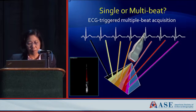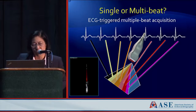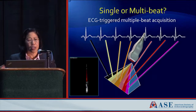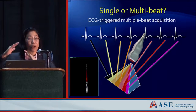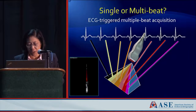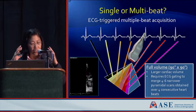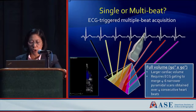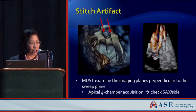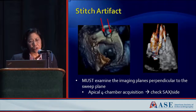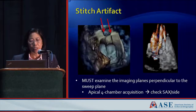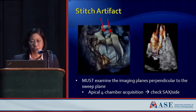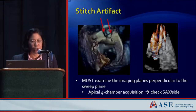One challenge we've had to live with is relatively low volume rates — the 3D equivalent of frame rate. The way we've gotten around this is to take very small volumes and splice them together. Multiple beats spliced together allow you to get a very large volume, but these are not a continuous real-time volume — they are composed of multiple small sub-volumes, and the major issue with that is the splice artifact.